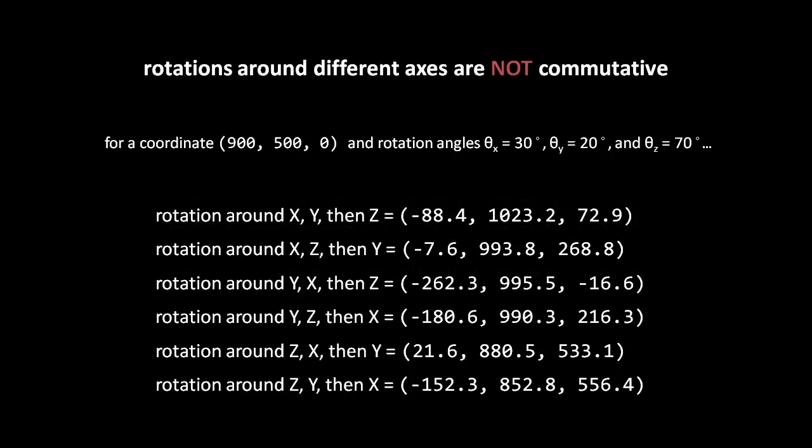Probably the most aggravating thing about rotations is that, just like rotations in 2D around different pivot points are not commutative, rotations in 3D around different axes are not commutative. This can actually be quite hard to visualize sometimes, as if you just pick up a random object and try rotating it around different axes in different orders, you can easily fool yourself with some edge cases where the results of different rotation orders seem to produce similar results. So it's probably clearer to look at some numbers. Say that I have a 3D coordinate at 900, 500, 0, which I'll rotate 30 degrees around the x-axis, 20 degrees on the y-axis, and 70 degrees around the z-axis. For all 6 possible orders in which I can apply these 3 rotations, the point ends up in a totally different position.